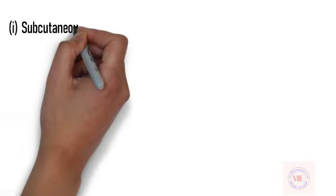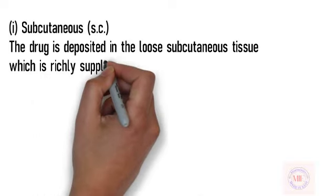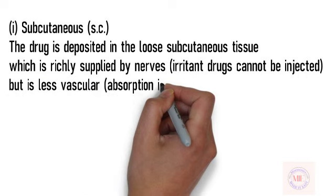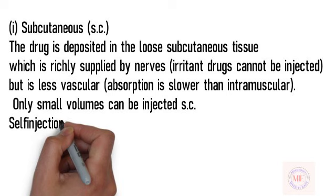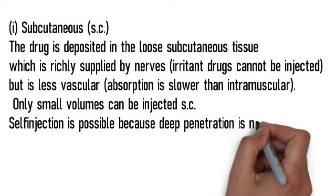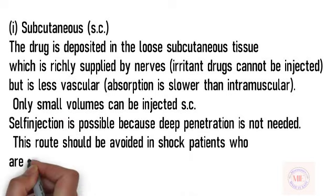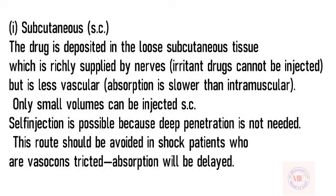The important parenteral routes are: (I) Subcutaneous (SC): The drug is deposited in the loose subcutaneous tissue, which is richly supplied by nerves. Irritant drugs cannot be injected, and as it is less vascular, absorption is slower than intramuscular. Only small volumes can be injected SC. Self-injection is possible because deep penetration is not needed. This route should be avoided in shock patients who are vasoconstricted, as absorption will be delayed.